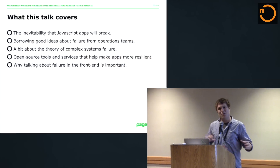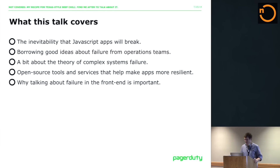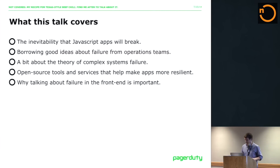So I'm going to go over a couple of quick things. The first thing is, and we already know this, that it's inevitable that your JavaScript app will break. Even if you don't break it, the browser will eventually break it for you. I think there are some great ideas from operations teams that we can borrow as a community to make our apps more resilient. I want to throw in just a little bit about the theory of complex systems failure, and also talk about some open source tools and services that I think ultimately help you make more resilient apps. And then finally, in closing, talk a little bit about why that's important at all.